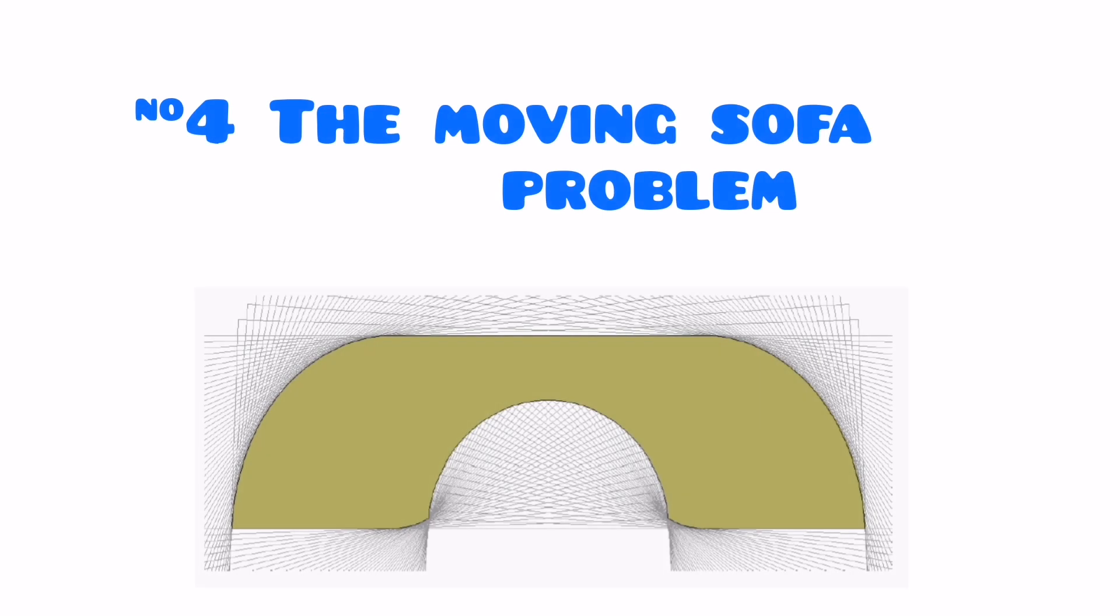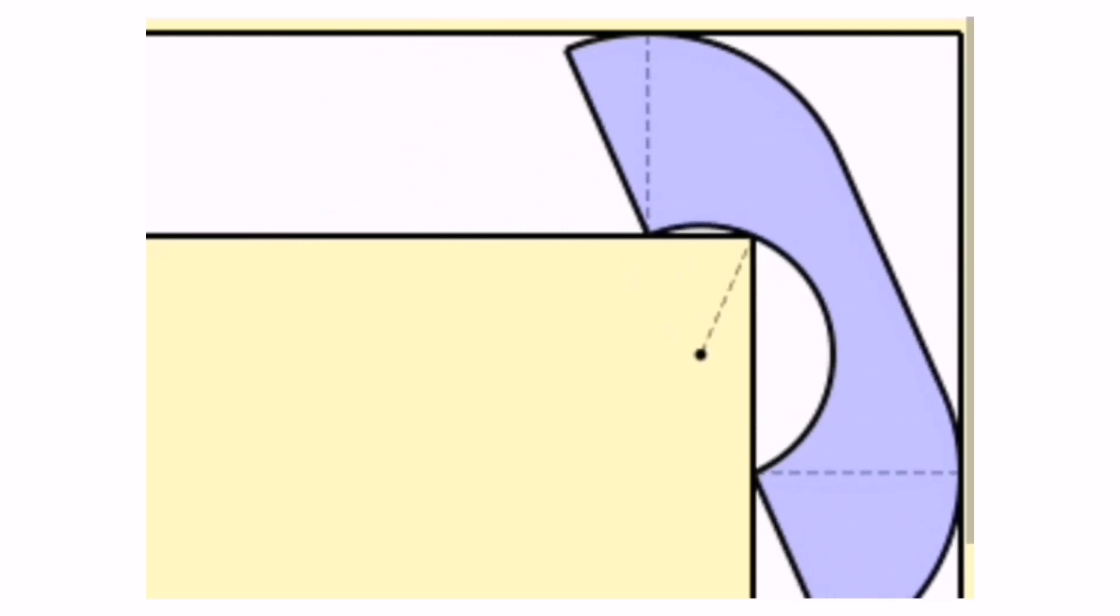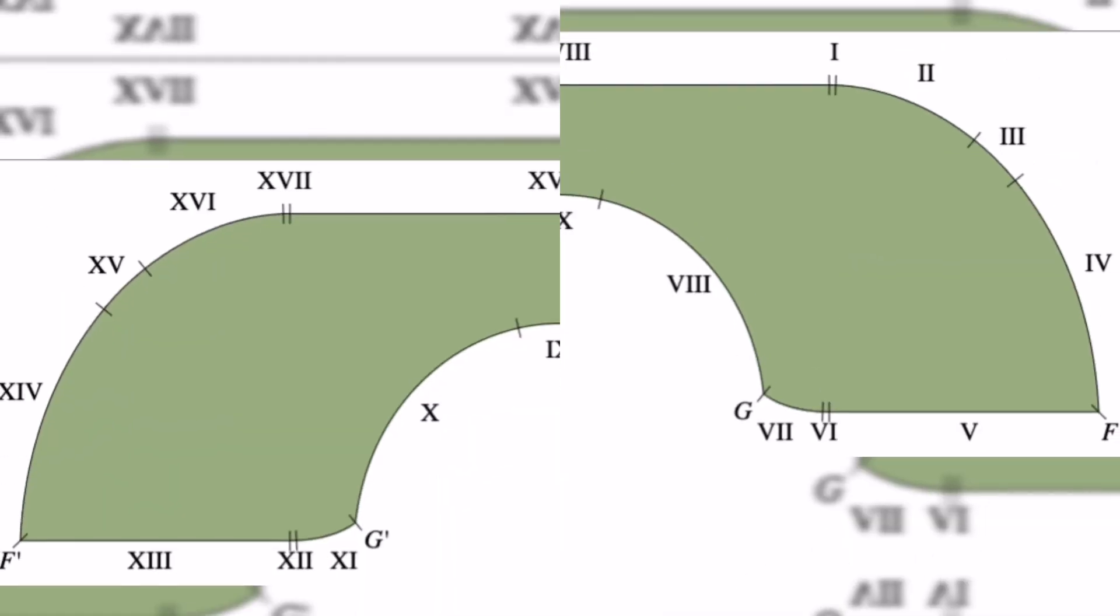Number 4. The Moving Sofa Problem. In a two-dimensional, L-shaped corridor with a width equal to the width of the sofa, what is the maximum area the sofa can occupy while still being able to turn the L-shaped corner?